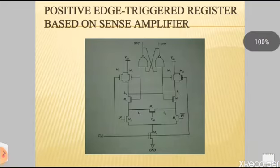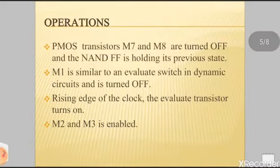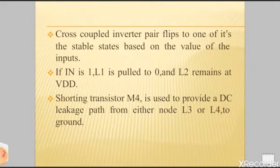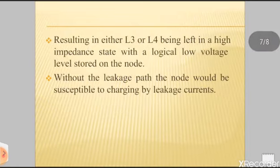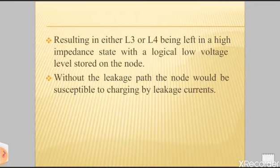The shorting transistor M4 is used to provide a DC leakage path from either node L3 or L4 to ground. This is necessary to accommodate where the inputs change their value after the positive edge of the clock has occurred, resulting in either L3 or L4 being left in a high impedance state with a logical low voltage level stored on the node. Without the leakage path, the node would be susceptible to charging by leakage currents.